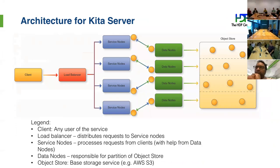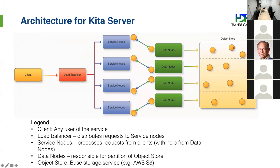Parallelism is implemented in a two-tier set of containers. There's a front-end tier called service nodes that handle requests from clients, and a back-end tier that partitions the object storage space. When clients request data spanning multiple objects, those requests can be parallelized across any number of data nodes. If you have 100 data nodes and you're accessing data that spans 100 chunks, each of those data nodes can be reading data in parallel, which speeds up performance greatly.